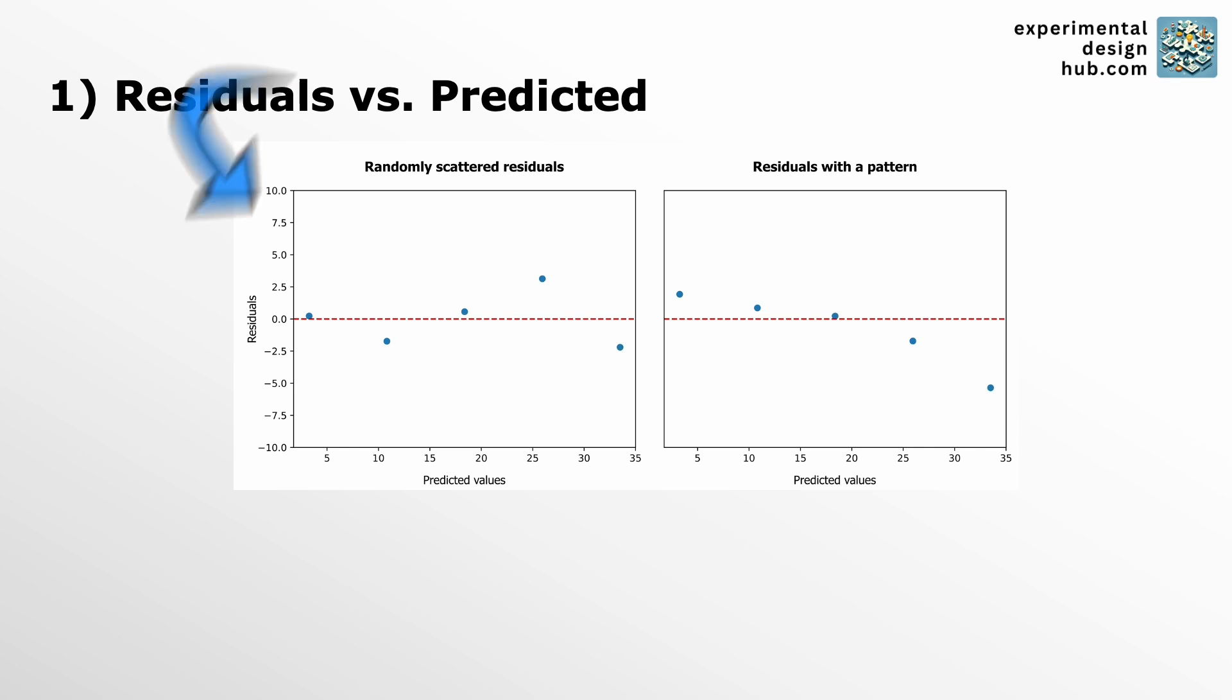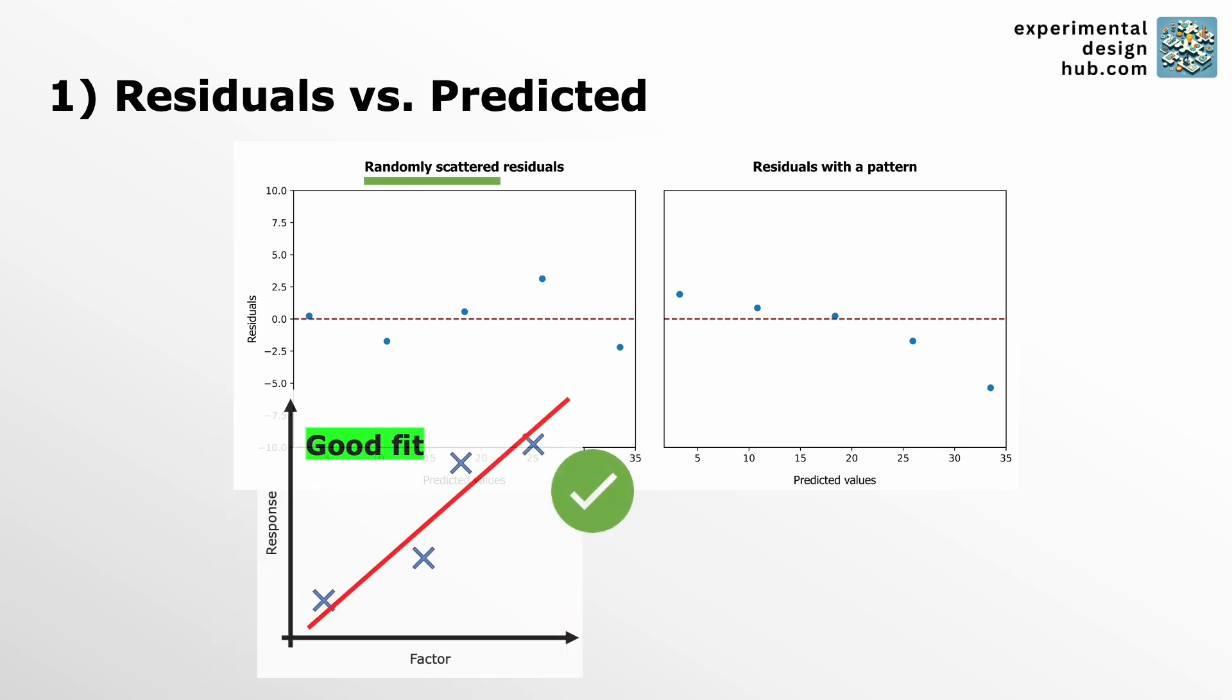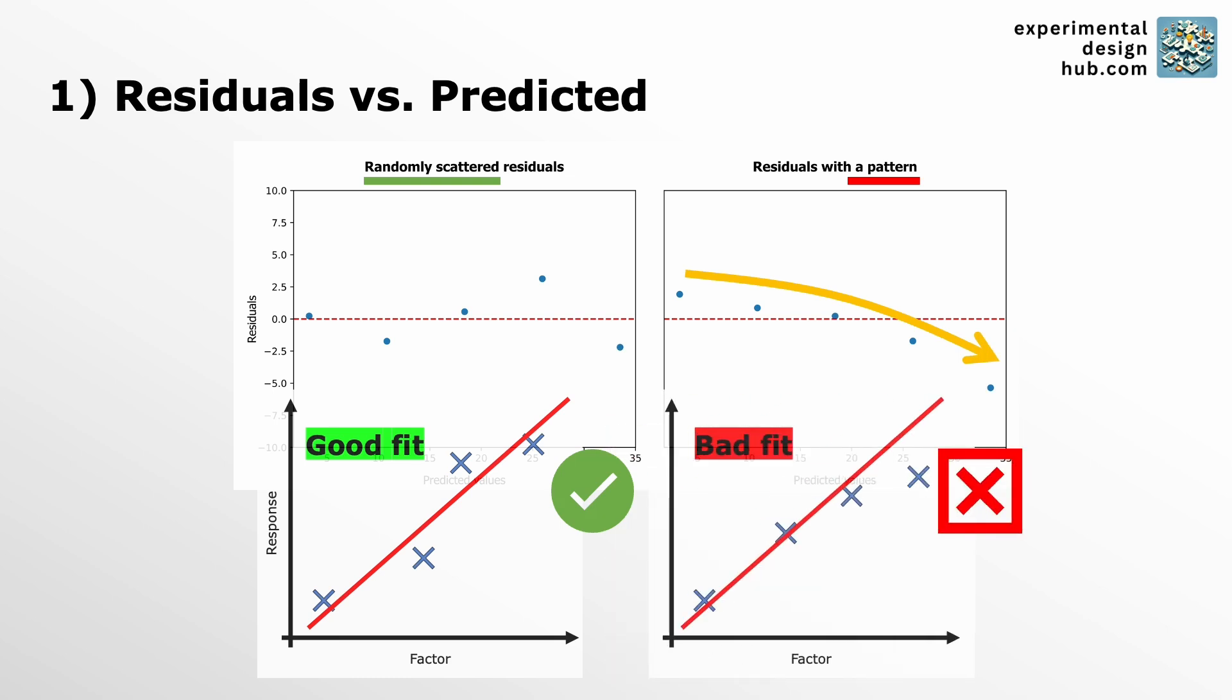A residuals versus predicted plot is a simple way to see if there's anything off with your model. On the y-axis you've got the residuals and on the x-axis the predicted values. What you want is a nice random scatter of points. If you see a pattern like a trumpet shape, it's a sign that your model isn't capturing the data well enough. Maybe you need to transform your data, add an interaction term, or perhaps a quadratic term is missing.